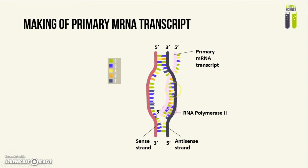Transcription will continue until a sequence called a termination sequence is reached. Near the termination sequence, a structure called the poly-A tail — which is made up of 100 to 200 adenine bases — is added to the 3' end of the RNA molecule.